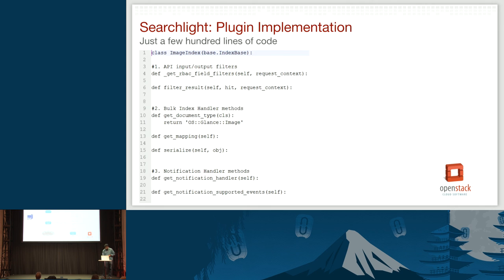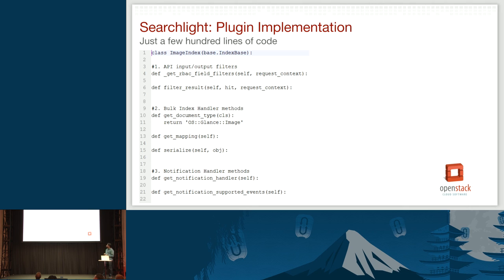Let's look at what it takes to write a new plugin. We have a base API that defines all the hooks. The 'get RBAC filters' method is where you give a sample Elasticsearch filter. The 'filter result' method is where you specify what data needs to be stripped off or added based on how your service will look.